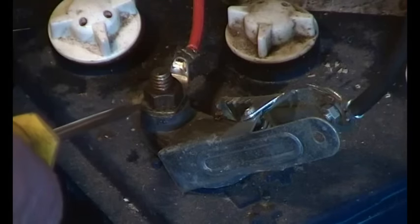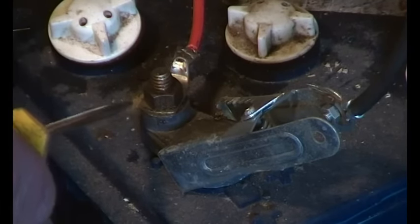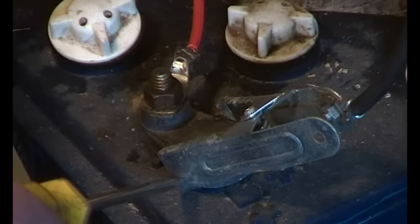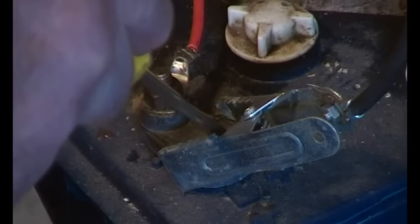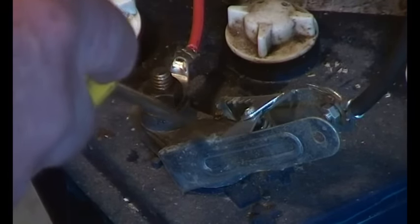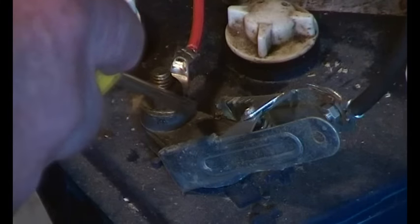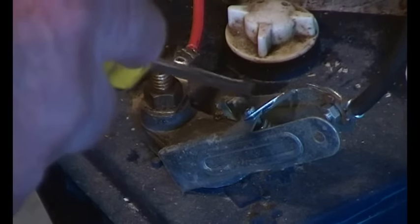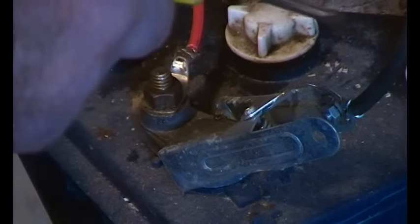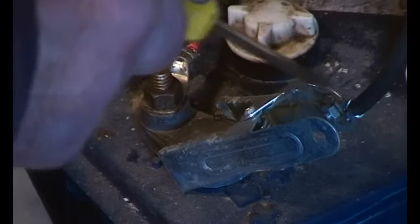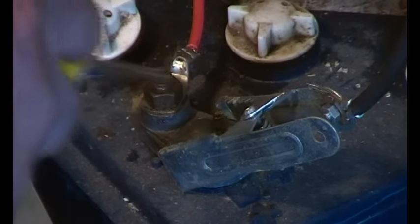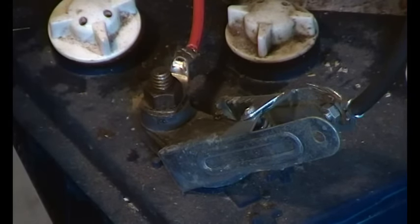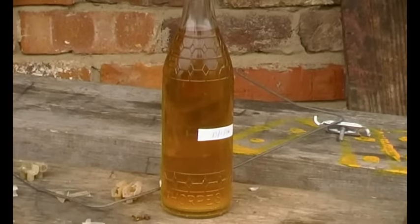But here we've got this connected to the terminal and then the output connected to the terminal again separately. So the only way you could get full battery volts through to this would be if there was a serious breakdown in the cell. It's a sort of safer way of doing things.